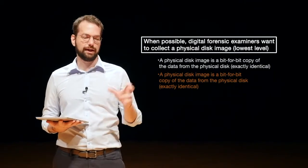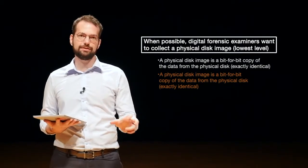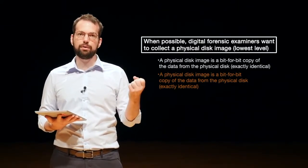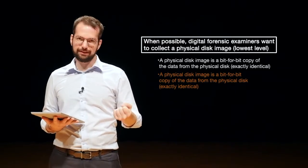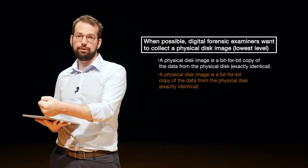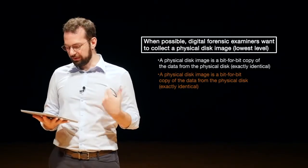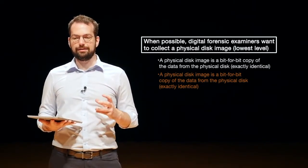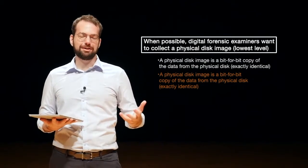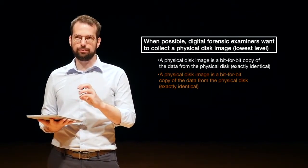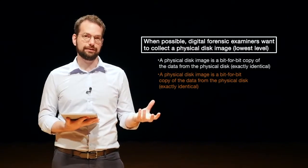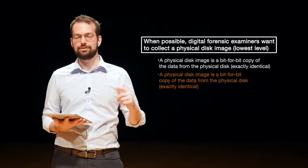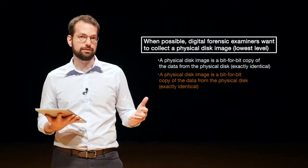A physical disk image is a bit-for-bit copy of the data from the physical disk, and this is an exactly identical copy. So we have some hard drive, a USB stick, a mobile phone hard drive, a hard drive from a computer. We want to copy the data bit-for-bit exactly the same into another location. The physical disk image can allow for the recovery of the greatest amount of information.